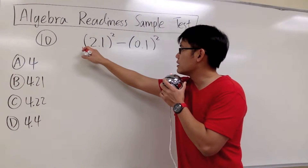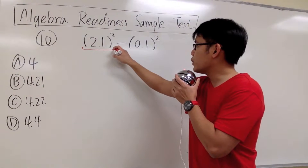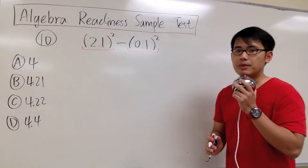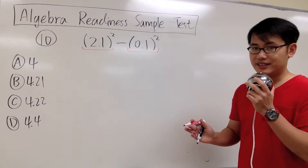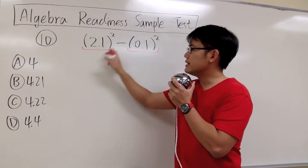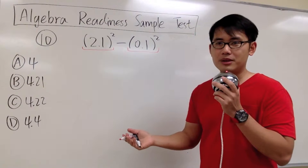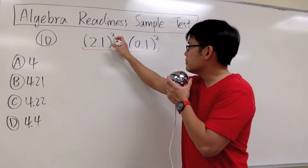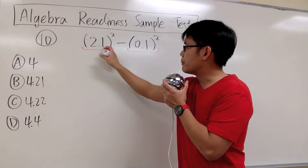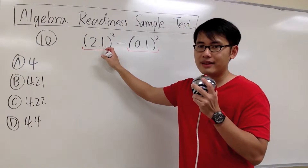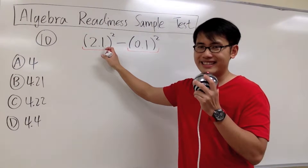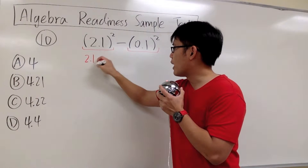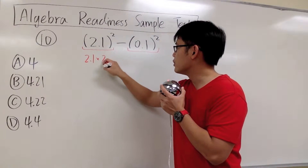So we are going to focus on the 2.1 to the second power, as well as the 0.1 to the second power first. Let's work this out — 2.1 to the second power. What does the second power mean? The second power means that we have to write down the number, namely the 2.1, twice, and then multiply them together. So we are going to have 2.1 times 2.1.